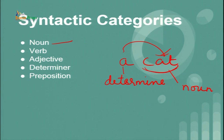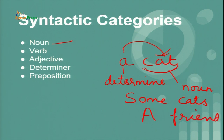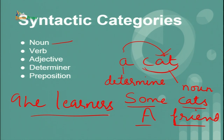In the same way, you can take other examples: 'some cats,' 'a friend,' 'the learners.' In all these examples you find a very common relation — you are putting the noun right after the determiner.